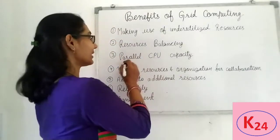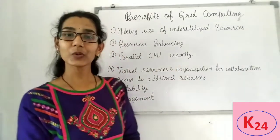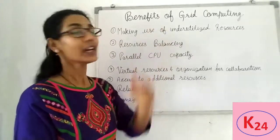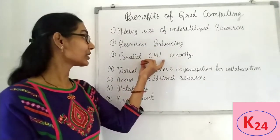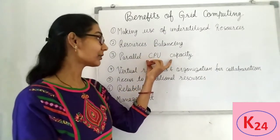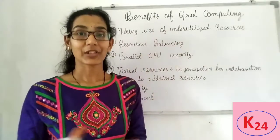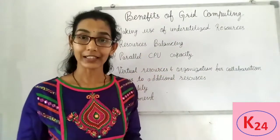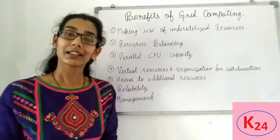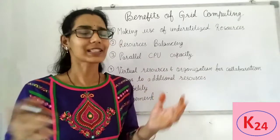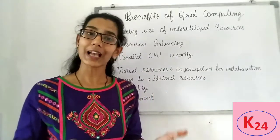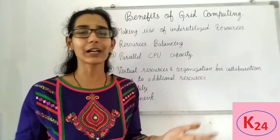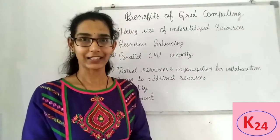Now the third one is parallel CPU capacity. It's a very attractive feature of grid computing. Grid computing network mein multiple machines per CPU parallelly run karke complex problem ko sub-tasks mein execute kiya jata hain. Aur is application ko perform hone mein aur process hone mein bahot hi kam time lagta hain.